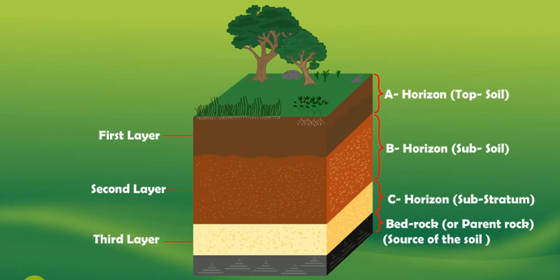This humus makes the topsoil very fertile. Topsoil is the most useful part of the soil. The layer of soil which is just below the topsoil is called B horizon, also known as subsoil. The subsoil is much less fertile as compared to the topsoil.